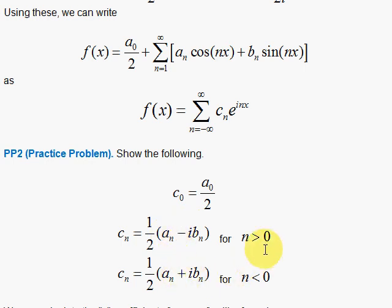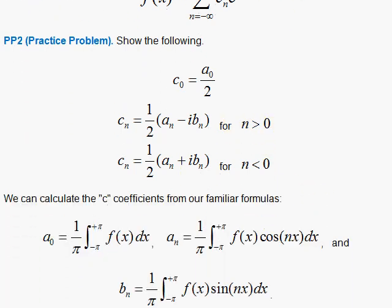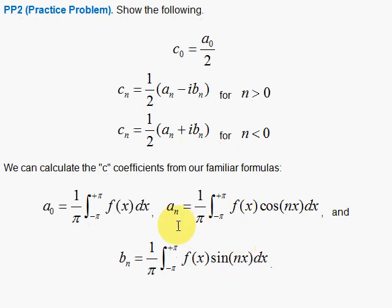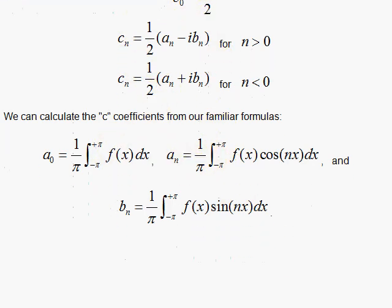Now notice that these here can be expressed in terms of our a's and b's based on our formulas from the previous chapter. So that's what we're going to do next. We're going to write the c's in terms of the a's and the b's. Make a connection, so to speak.